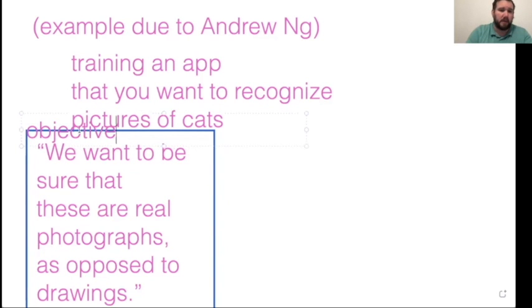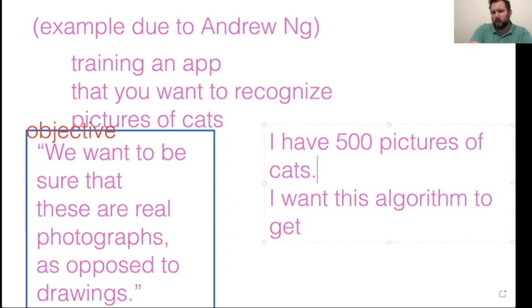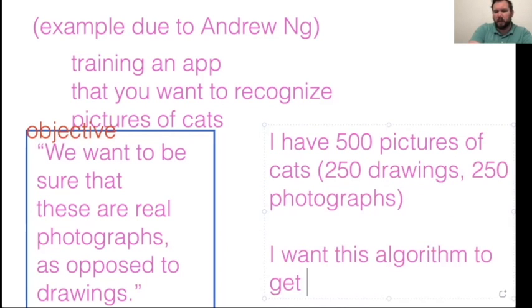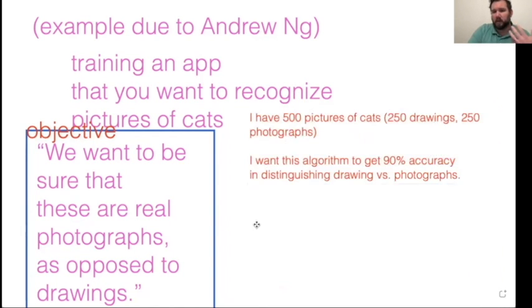So a metric that someone could use would be, I have 500 pictures of cats and I want this algorithm, and some of these pictures are drawings, some of them are photographs. And I want this algorithm to get 90% accuracy in distinguishing drawings versus photographs. So this would be a metric that I use. And then I can measure my performance on this metric.